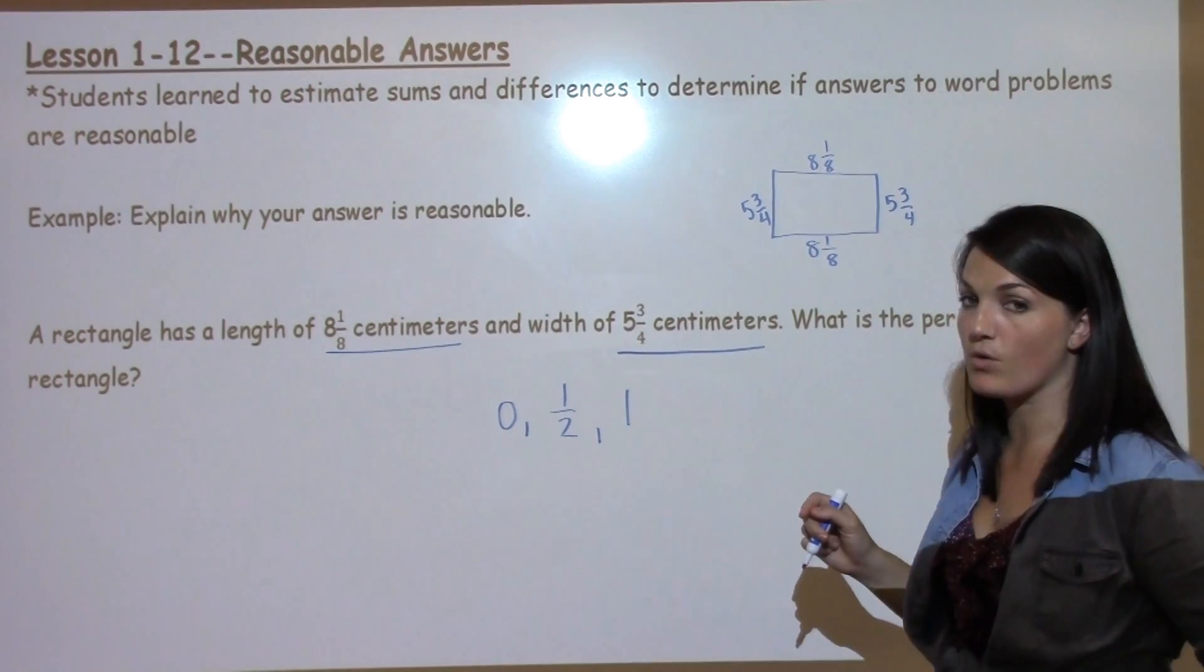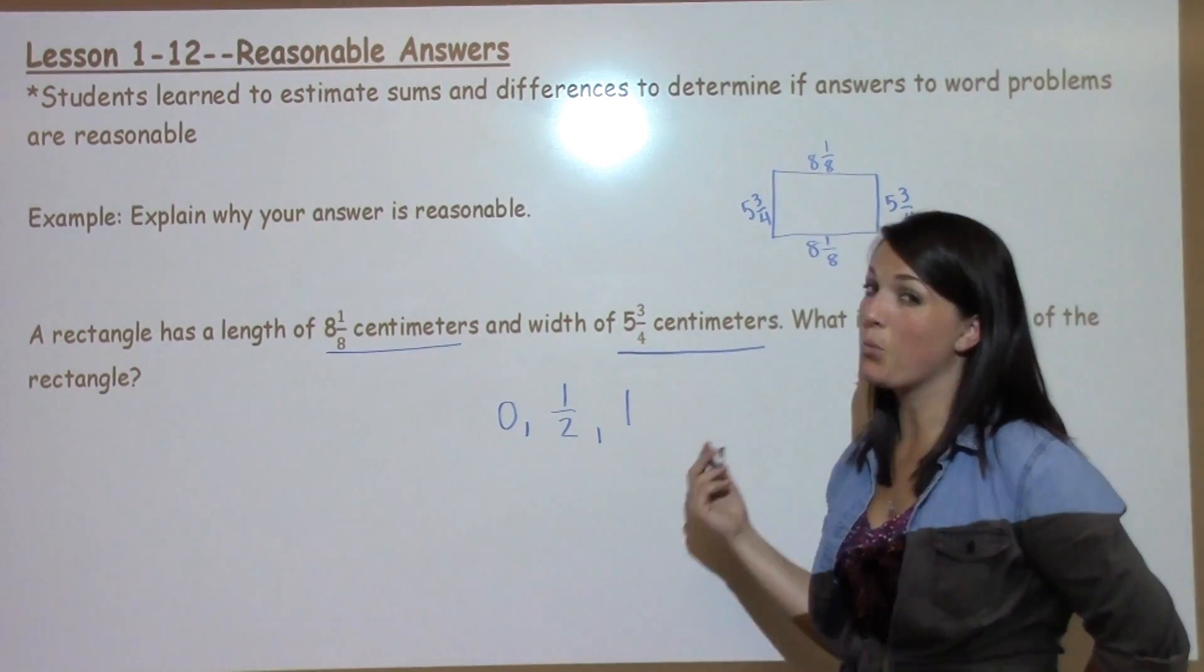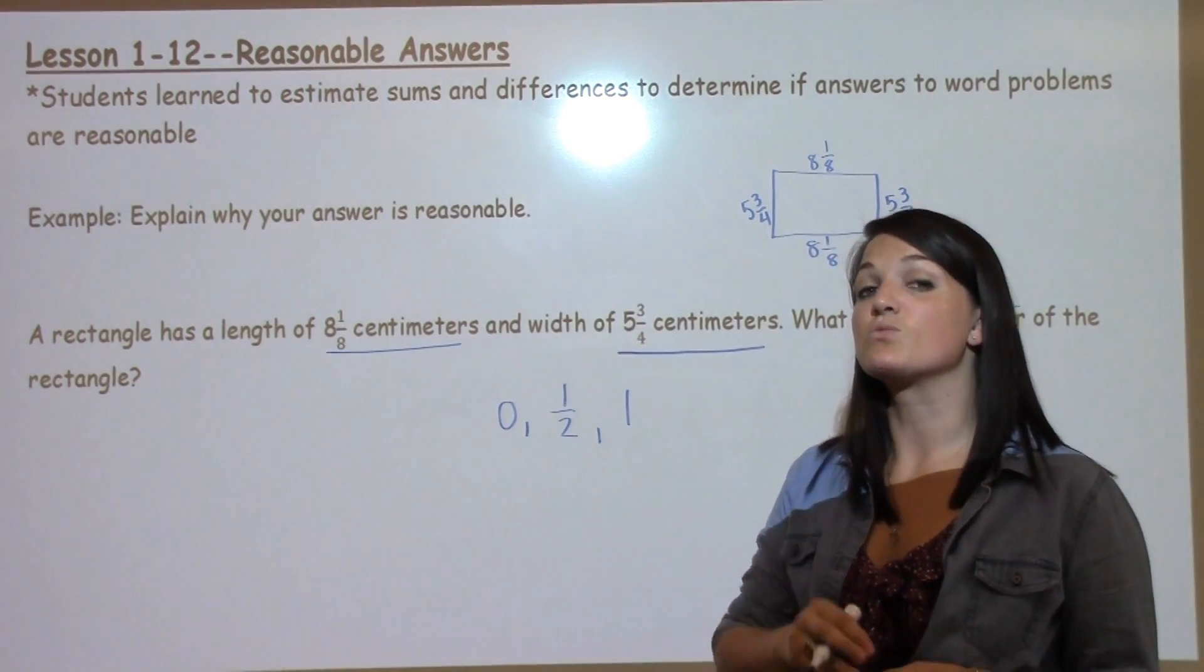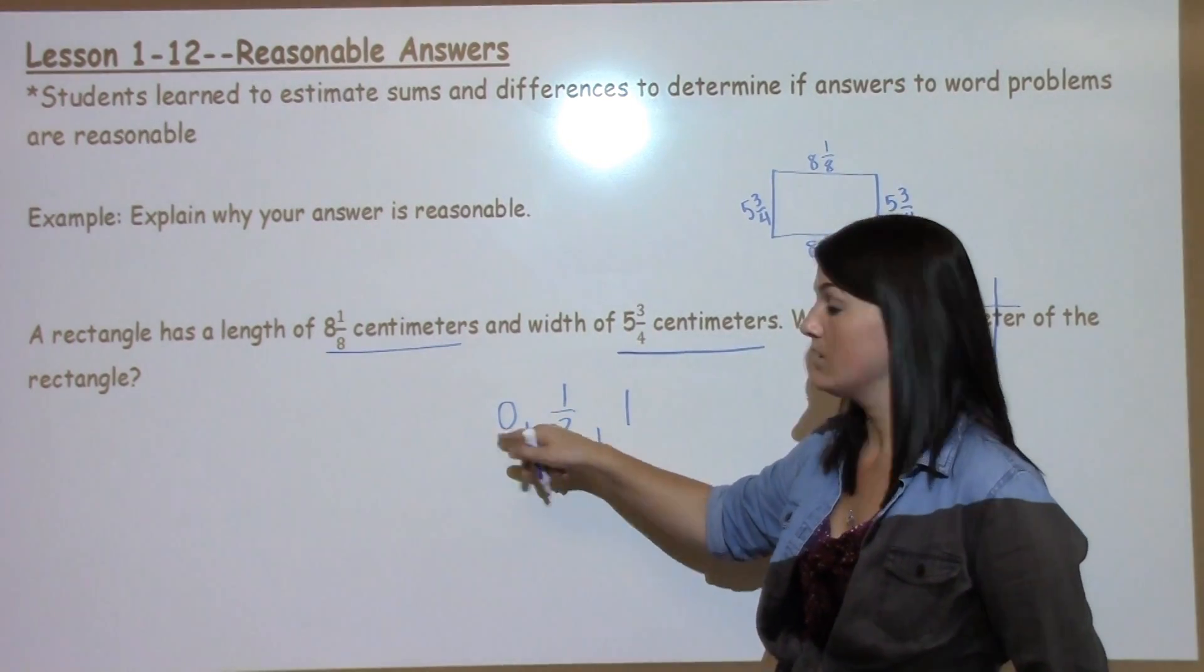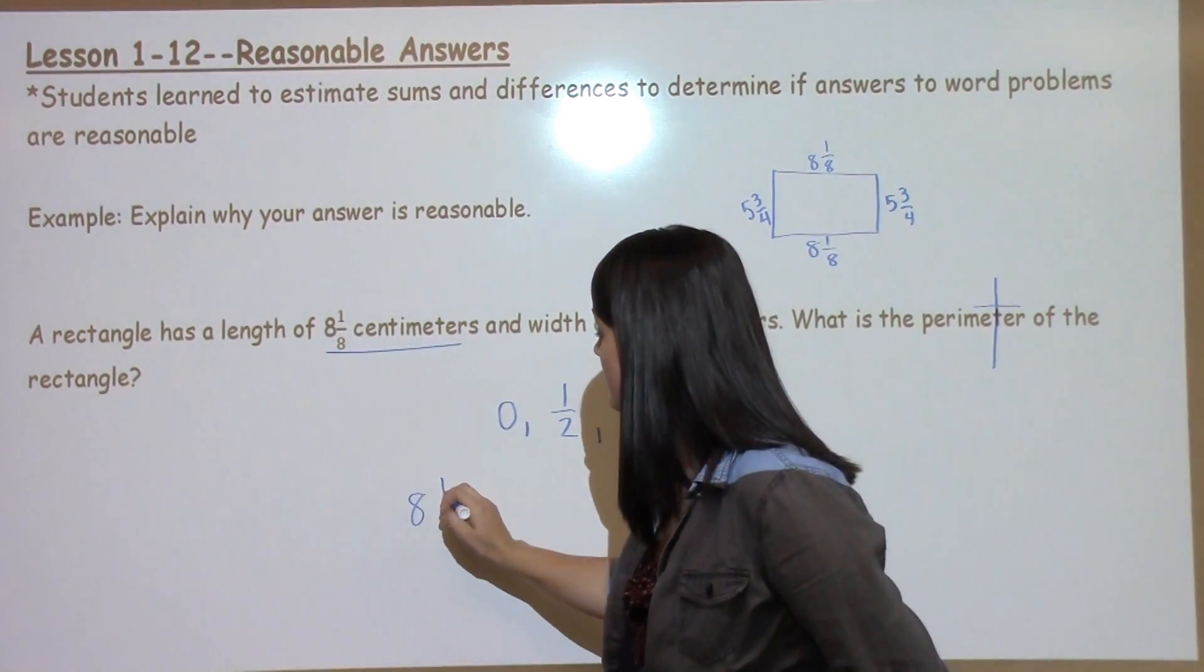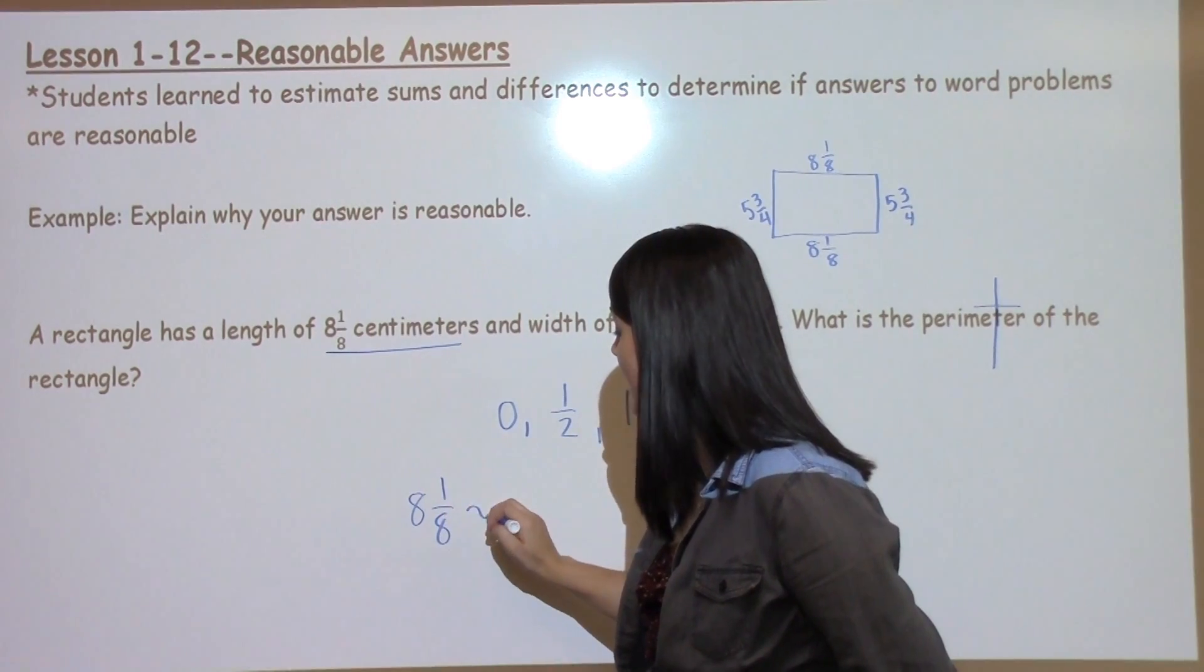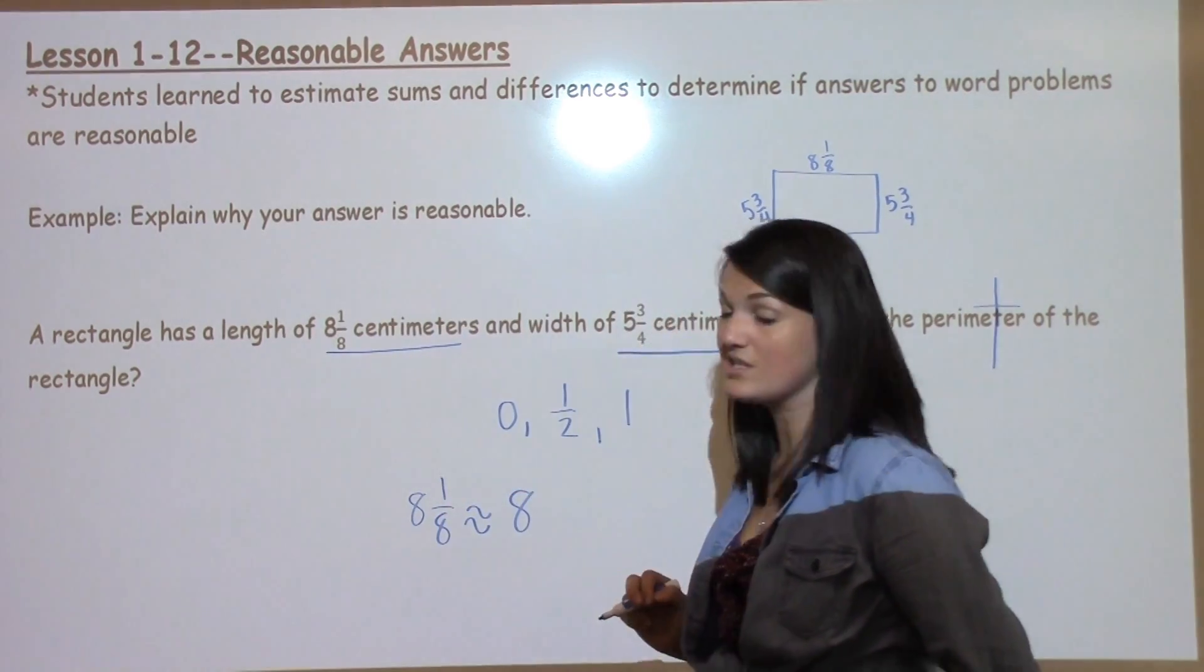I have 8 and 1/8 that I'm working with first. I know that 1/8, 1 is really far away from 8, so it's going to round to 0. So 8 and 1/8 is going to estimate to just 8.